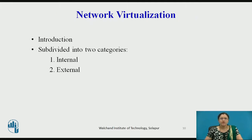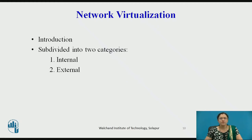The second type is network virtualization. It refers to the management and monitoring of a computer network as a single managerial entity from a single software-based administrator's console. There are two categories: internal, which provides network-like functionality to a single system, and external, which combines many networks or parts of networks into a virtual unit.